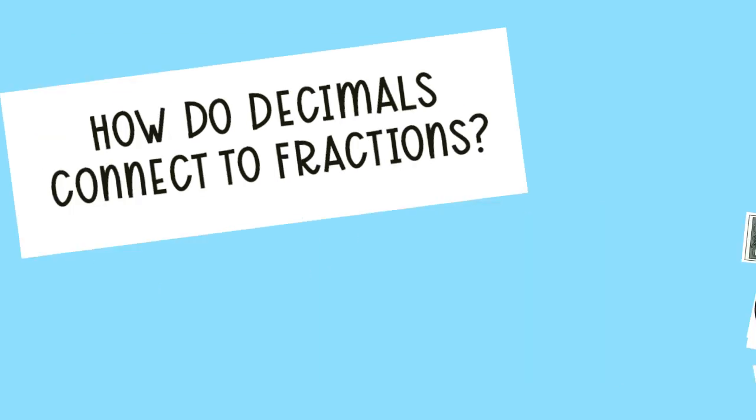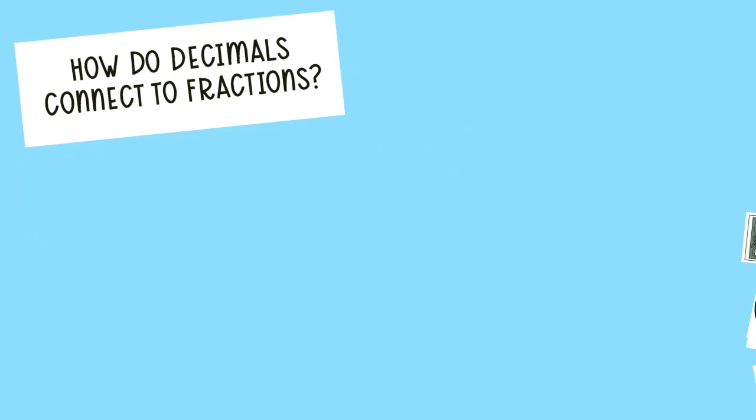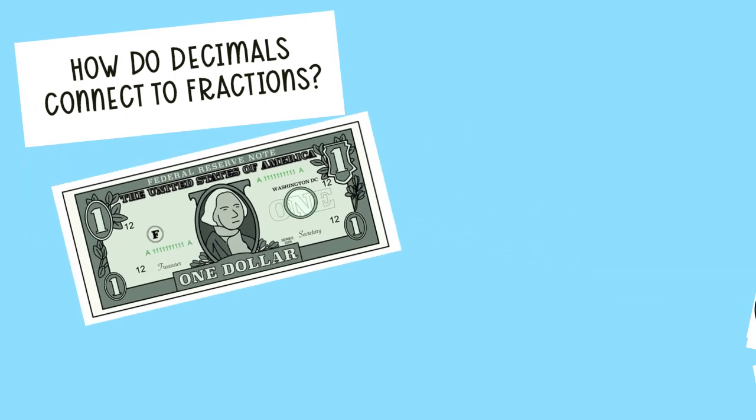So let's explore a little more about how decimals connect to fractions. We're going to stick with our dollar. That's our whole for today. If a dollar is divided into 100 equal parts, those are pennies, and those are one hundredths.